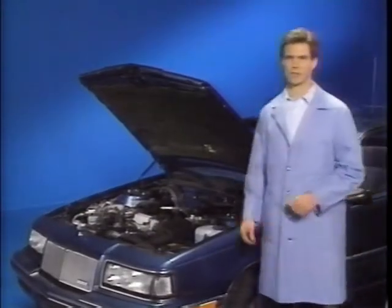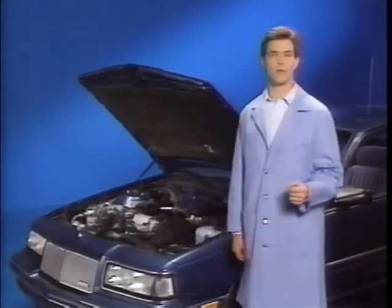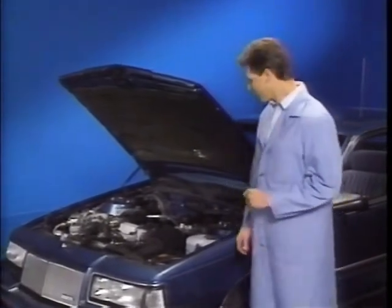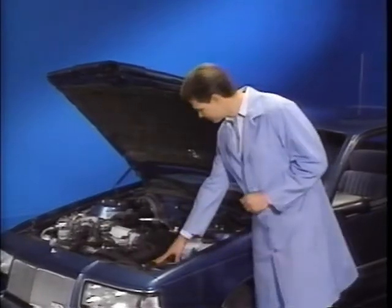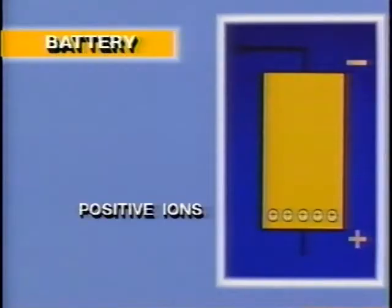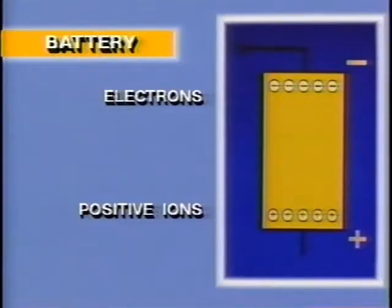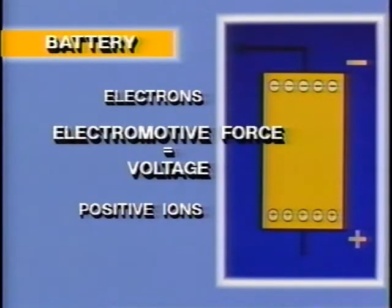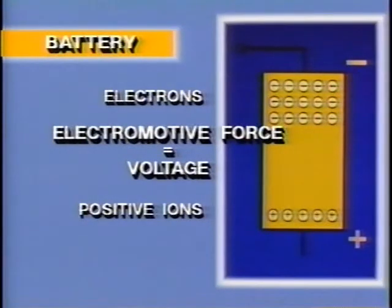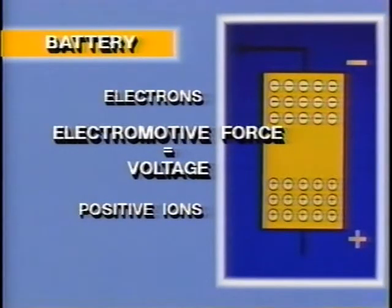The components of electricity are too small for us to see, but we all know they illuminate lamps and drive motors. In an automobile, the electricity starts at the battery. The battery produces a chemical reaction that releases positive charges called positive ions and negative charges called electrons. This reaction creates electromotive force, or EMF. EMF is the force behind the flow of electrons, measured in units called volts, or voltage. Electrons are forced to the negative terminal; positive ions are forced to the positive terminal.